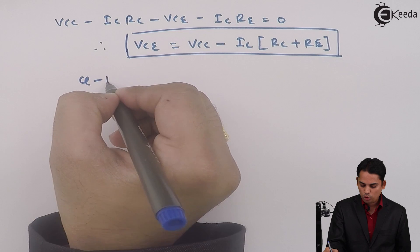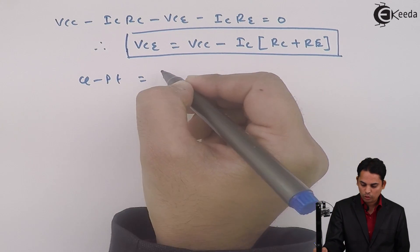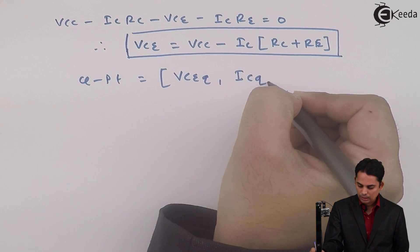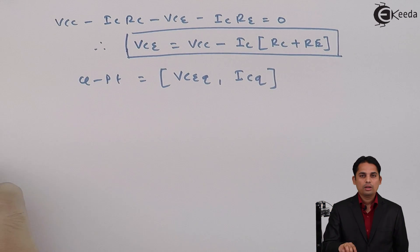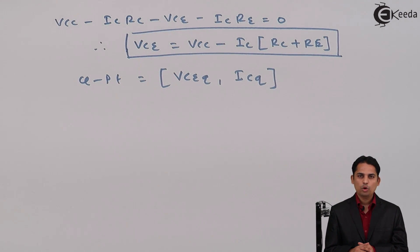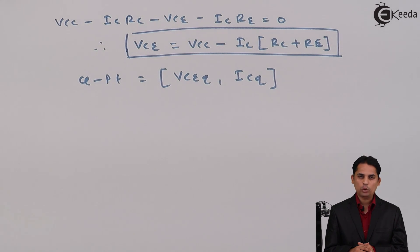The Q-points in collector to base bias can be found by applying three steps. Step 1: apply KVL to the input to get IB. Step 2: get IC where IC equals beta times IB. Step 3: apply KVL to the output loop to get VCE.